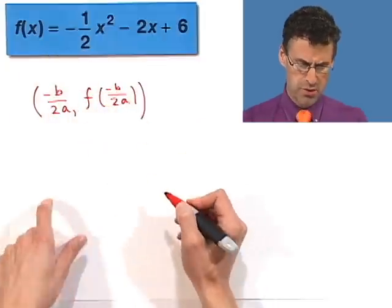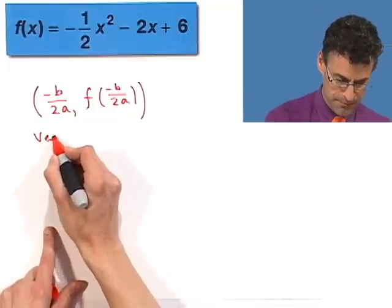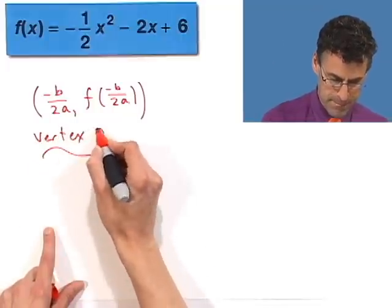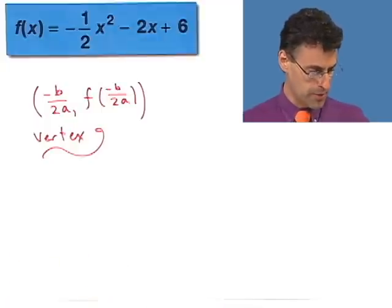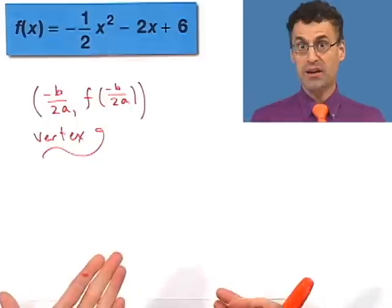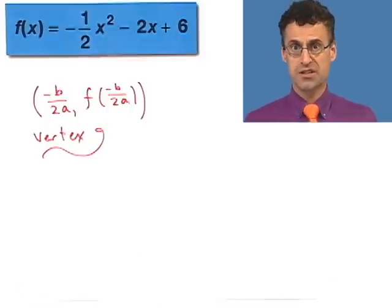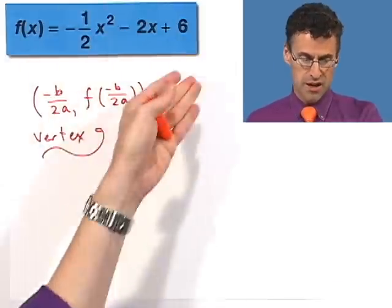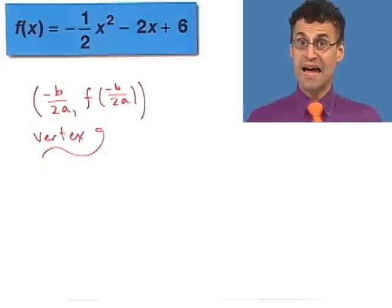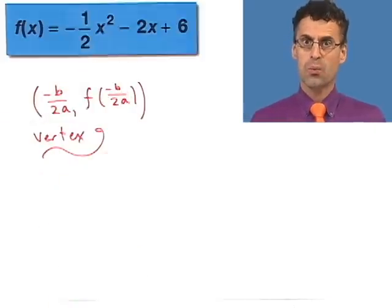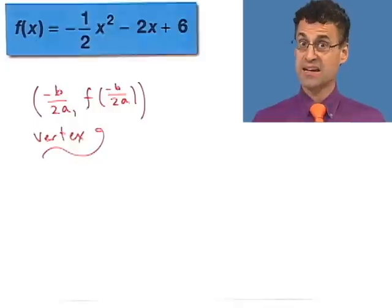Really fast, I just want to show you why this really represents the vertex. It comes out of the quadratic formula, which allows us to find the zeros or roots of the quadratic — those are the two x-values where the parabola crosses the x-axis.